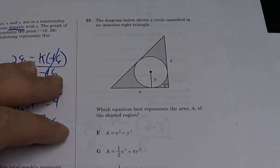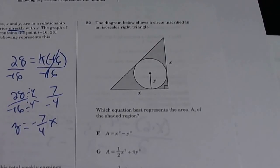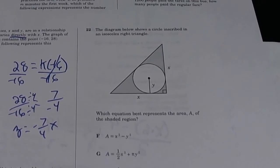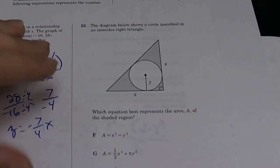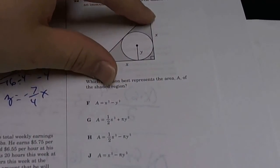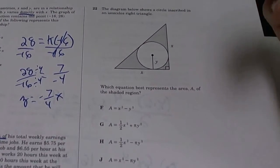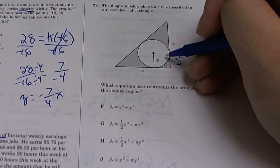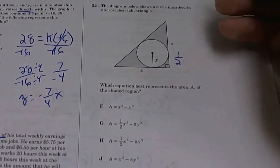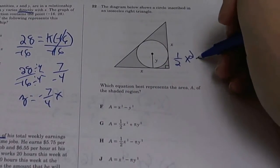The diagram below shows the circle inscribed in the isosceles right triangle. Which equation best represents the area A of the shaded region? So we want to know the area of all this, that part. So we know there's an area and you're going to subtract the area of the circle. Now what's the area of the triangle? Area of the triangle is 1/2 base times height. This base is X and the height is X. So it's X squared, 1/2 X squared. This is for triangle.